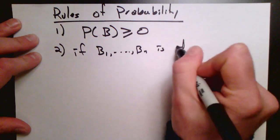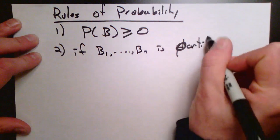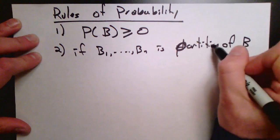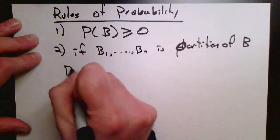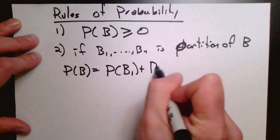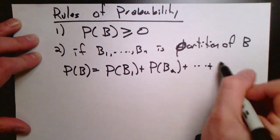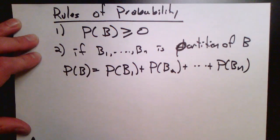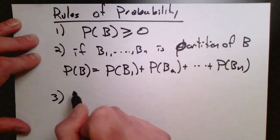Secondly, if we have a partition of an event b, so if we have b split up into n disjoint other events, b1 to bn, then the probability of the event b is just equal to the sum of the probabilities of each of the individual events.